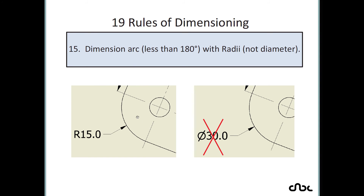Rule number 15: dimension arcs less than 180 degrees with radius, not diameter. Wherever you have a circle or arc less than 180 degrees, you should place a radius dimension, not a diametrical dimension.